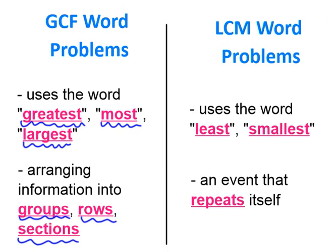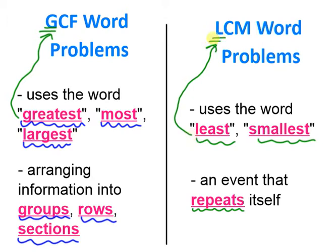Now, on the other hand, we can look at LCM word problems. So, instead of using the words greatest, most, and largest, you might look for the words least or smallest. Now, sometimes those words won't be there, and so you're going to look for the word problem asking you how often an event repeats. Remember that greatest, most, and largest goes back to the G in GCF, which is greatest. And least and smallest goes back to the L in LCM for least.